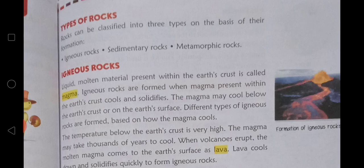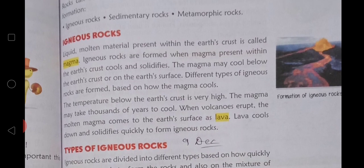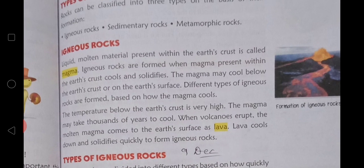The first type is igneous rock. The liquid molten material present within the earth's crust is called magma. Igneous rock is formed when magma present within the earth's crust cools and solidifies.